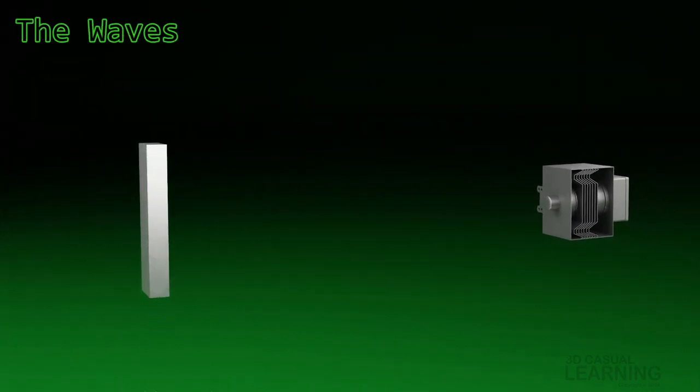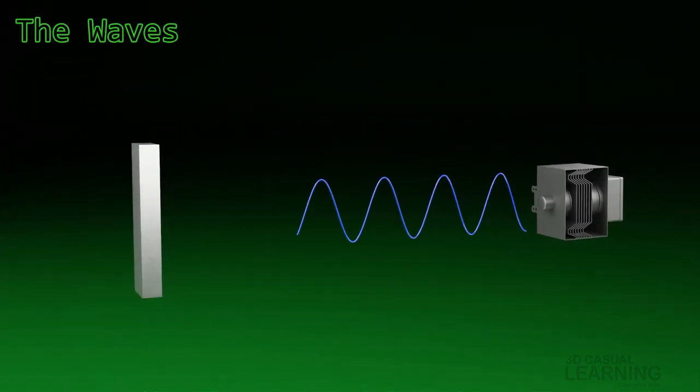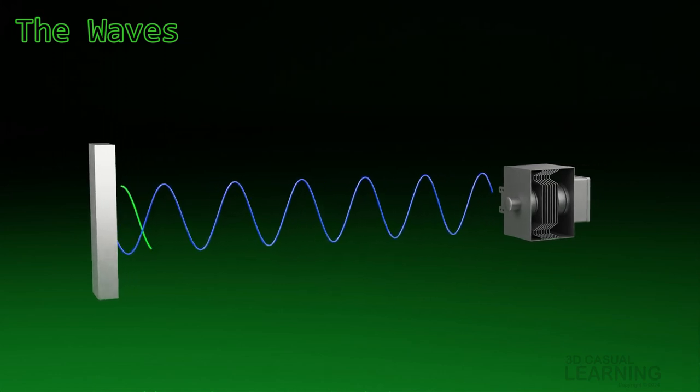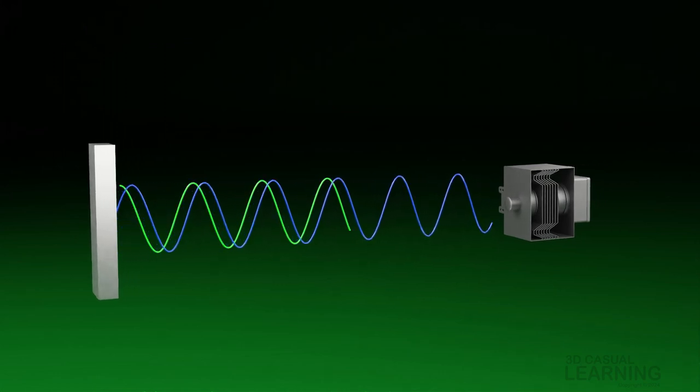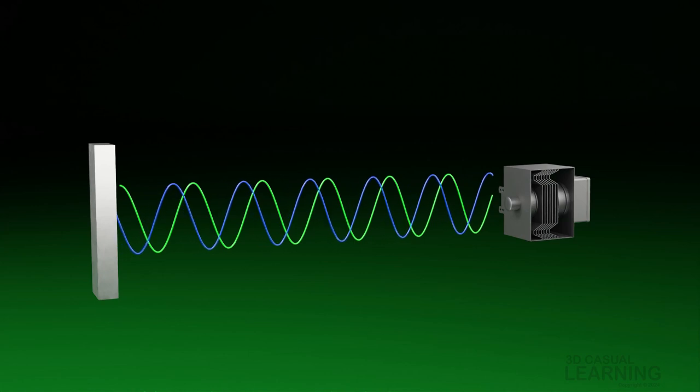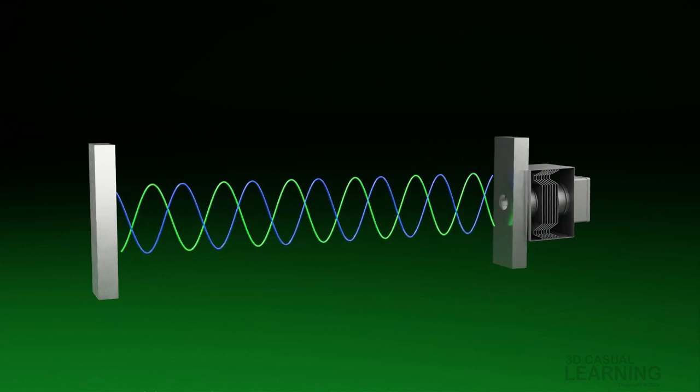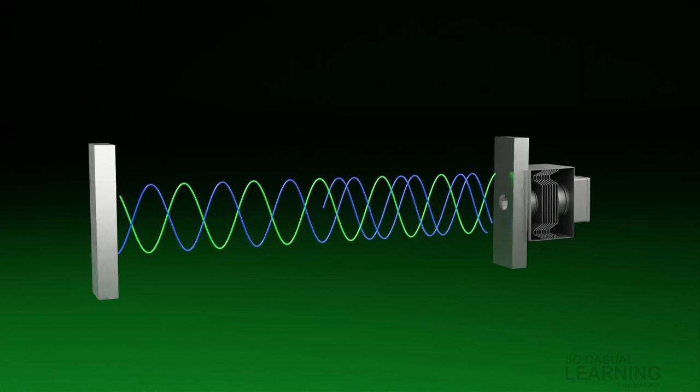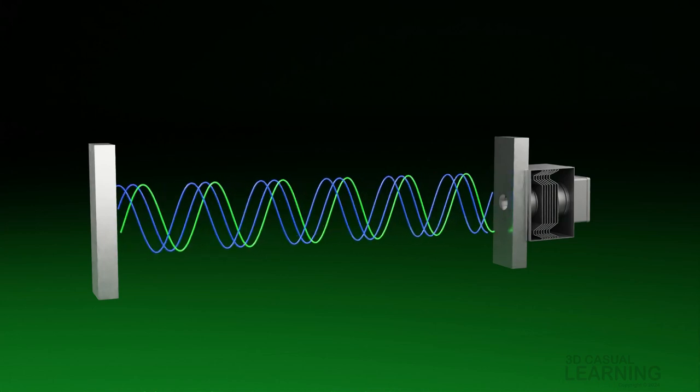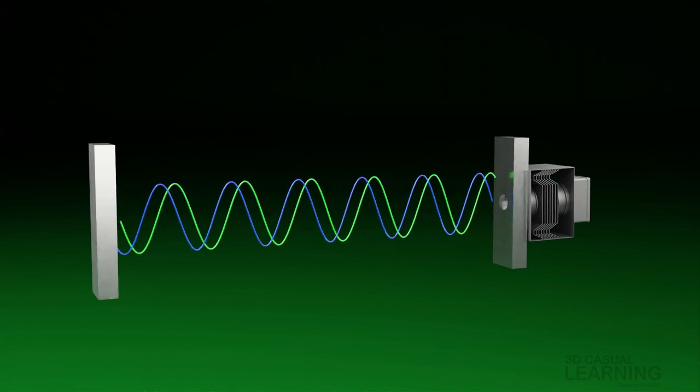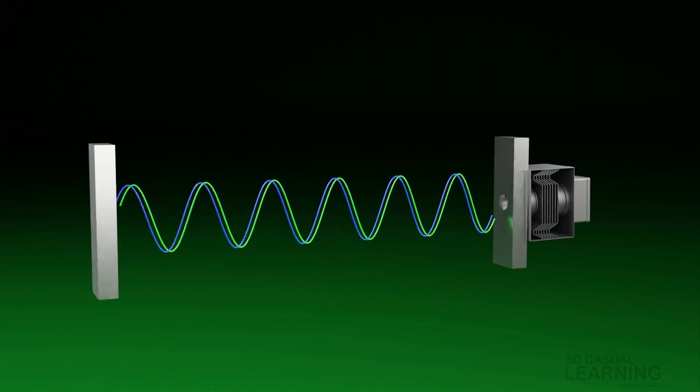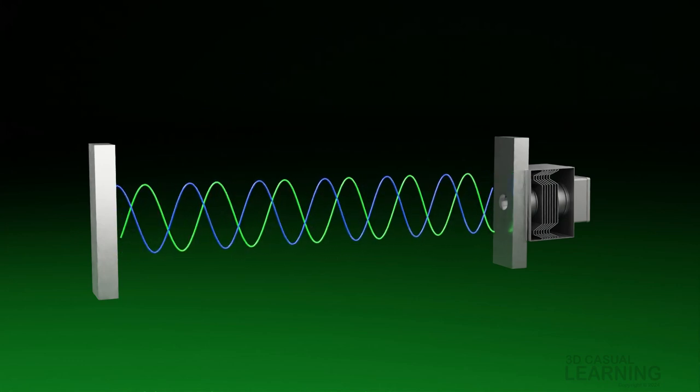If we place a metal plate in front of the magnetron, it will reflect the microwave. When we place a second metal plate on the other side, it will once again reflect the microwave. As a result, we get an alternating back and forth reflection of the microwave trapped within the plates.